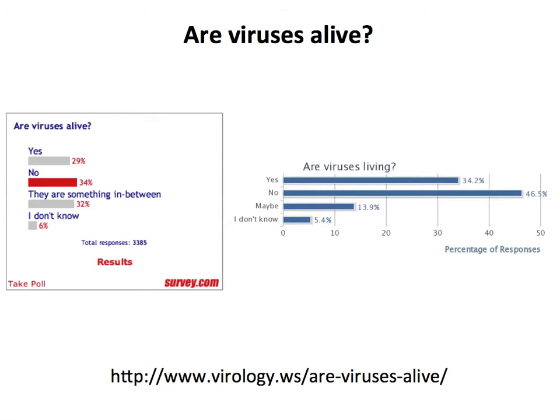For some reason this survey disappeared two weeks ago. SurveyMonkey decided that unless you pay, you can't have more than 100 responses to your survey, which is too bad because I had such a nice history there. So I made up a new survey on another site and we have a few hundred responses so far, with options: yes, no, maybe, I don't know. You can take this survey now or maybe at the end of the course and see what you think.